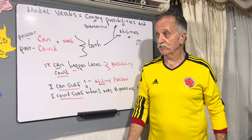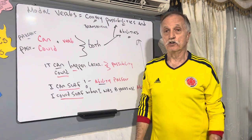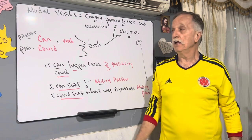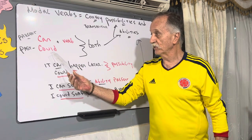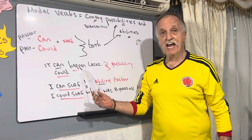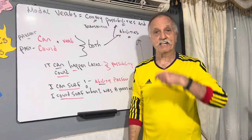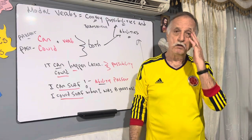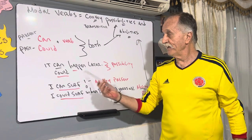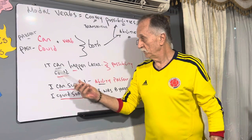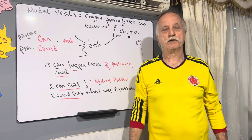Can is the present, could is the past. Could has various meanings. In this context: can — present, could — past. It can happen. The possibility exists that it can happen. Not sure, but it can happen. It could happen later. Those are possibilities: can and could.